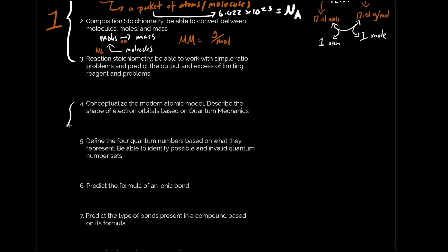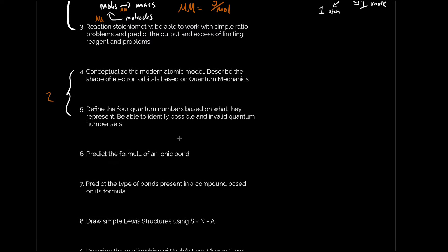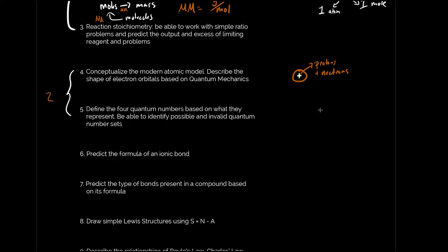Now let's jump to unit two — that's going to be question types four and five. Number four is conceptualizing the modern atomic model. The key point is that you have a nucleus containing protons and neutrons — neutrons are neutrally charged, protons are positively charged, so the nucleus overall is positively charged. Then you have electrons, and this is where the modern atomic model and quantum mechanics comes into play: it is not particles rotating in circular or elliptical orbits.